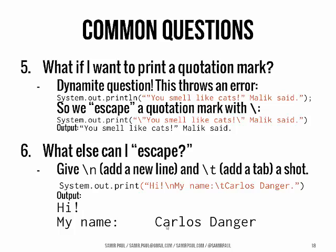The problem is, what if you want to print a quotation mark? Since strings start and end with quotation marks, that gets a little complicated. For example, System.out.println("\"You smell like cats,\" Malik said") — this is going to cause problems, because the compiler reads the first and second quote and thinks you just have an empty string, then wonders what 'you smell like cats' is. So what we have to do is escape a quotation mark with a backslash. That tells the compiler: what comes right after this backslash is not a quotation mark that ends a string — it's actually just a character that's supposed to be in the string. It won't print the backslash, just the character.